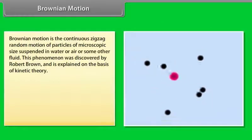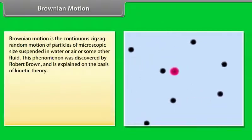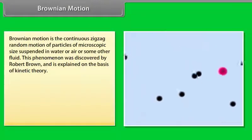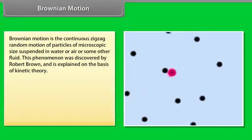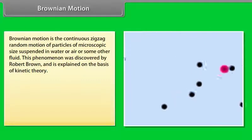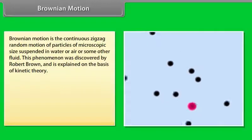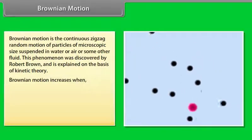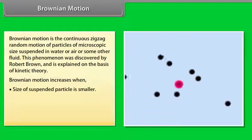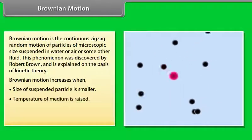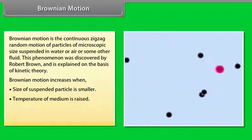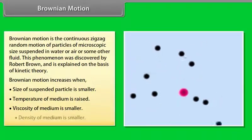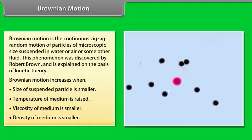Brownian motion: Brownian motion is the continuous zigzag random motion of particles of microscopic size suspended in water or air or some other fluid. This phenomenon was discovered by Robert Brown and is explained on the basis of kinetic theory. Brownian motion increases when size of suspended particle is smaller, temperature of medium is raised, viscosity of medium is smaller, density of medium is smaller.